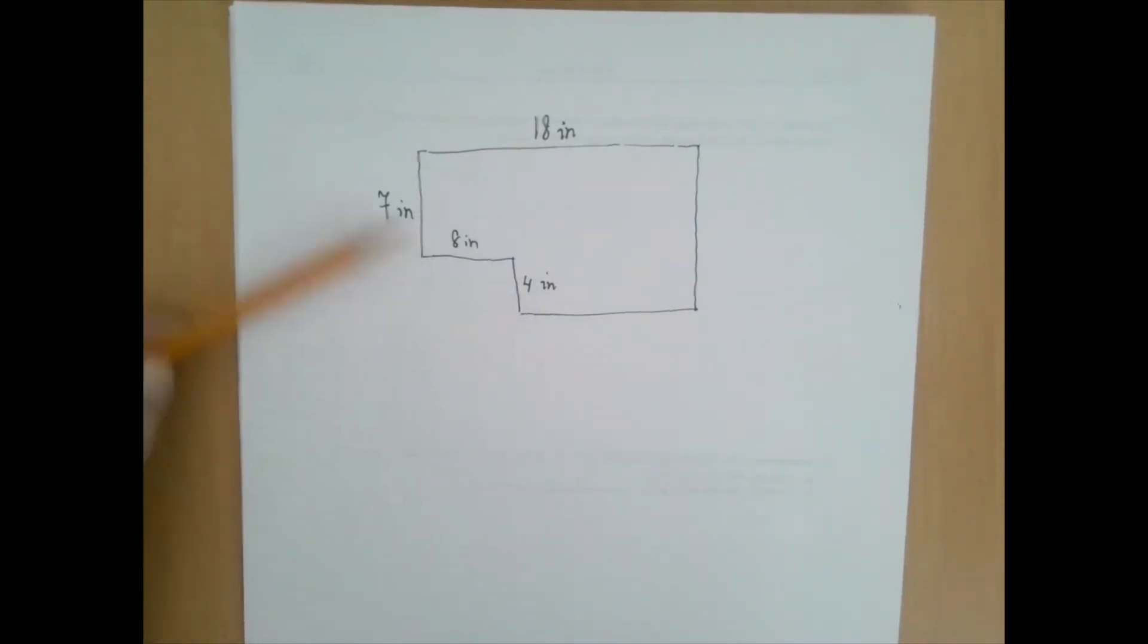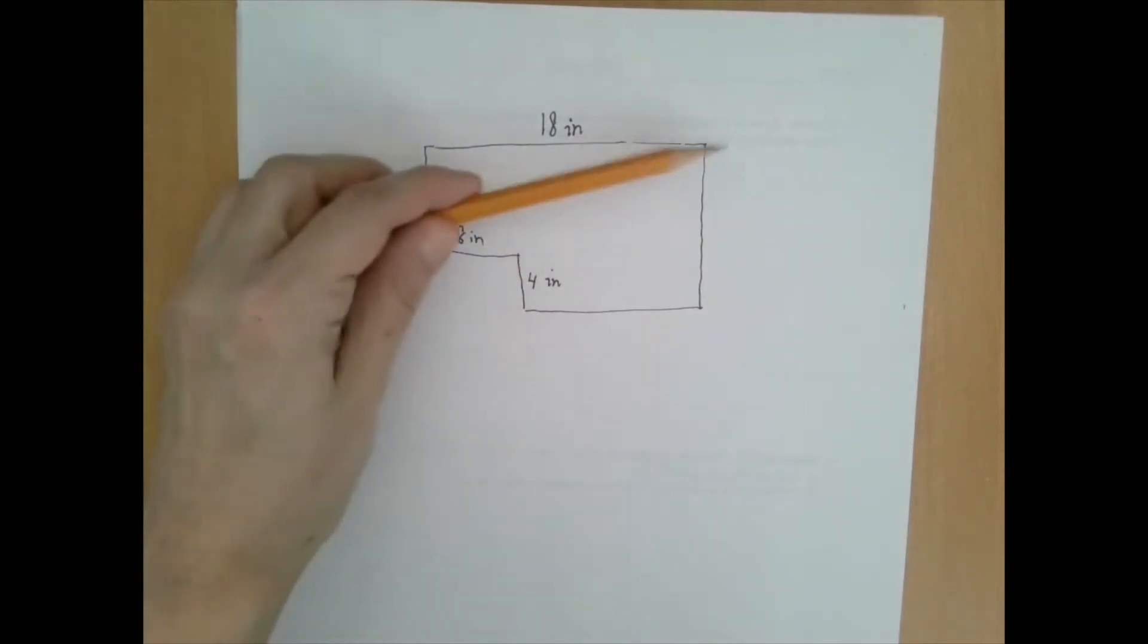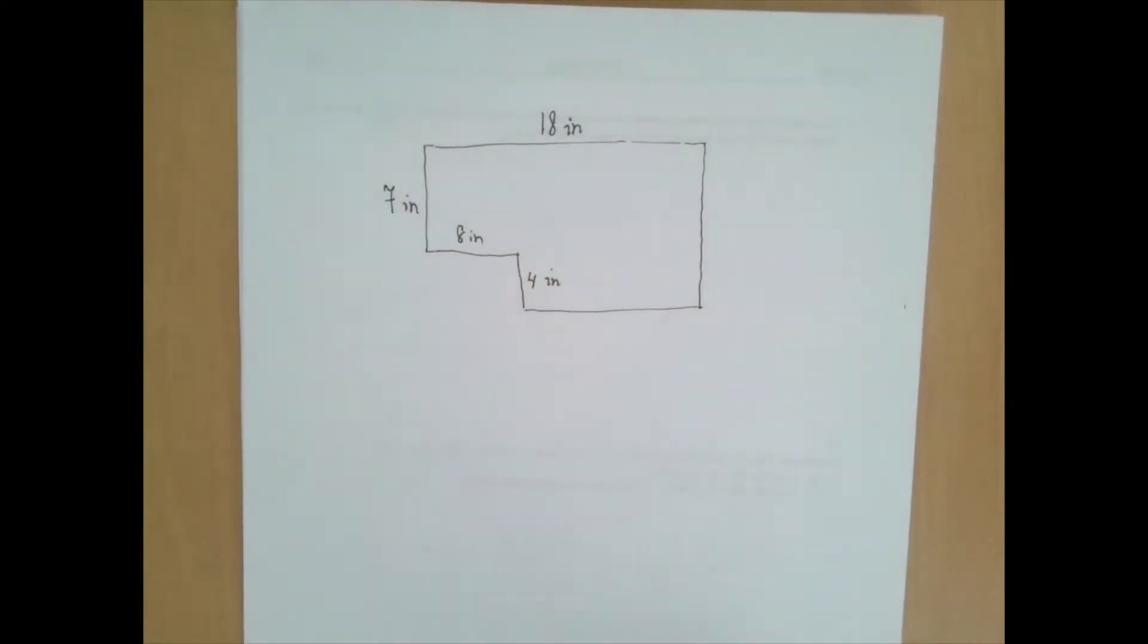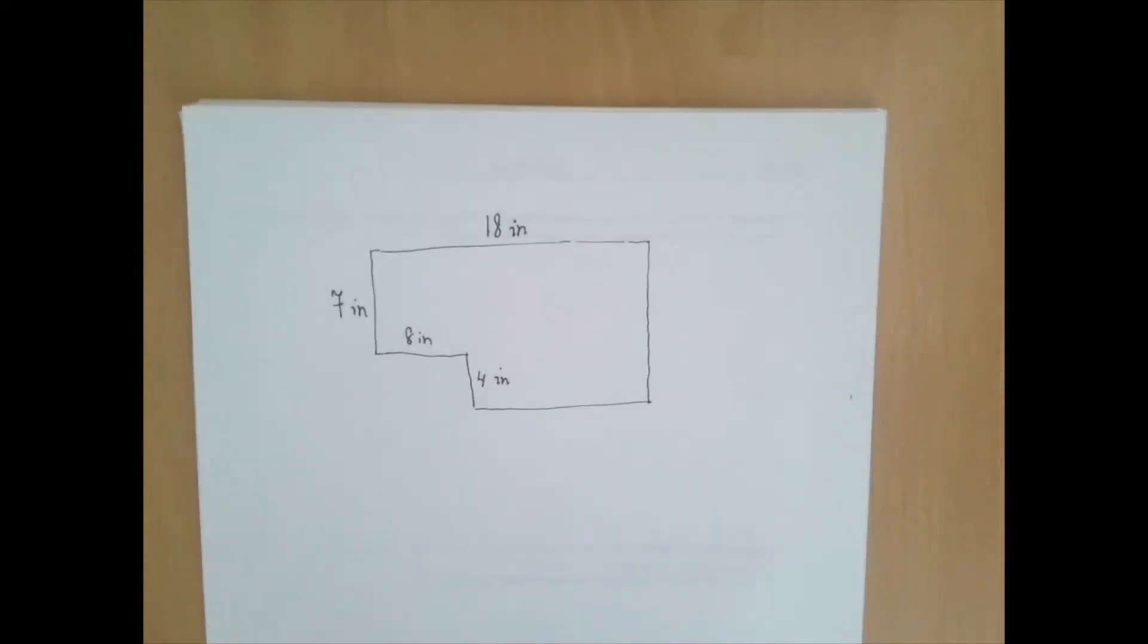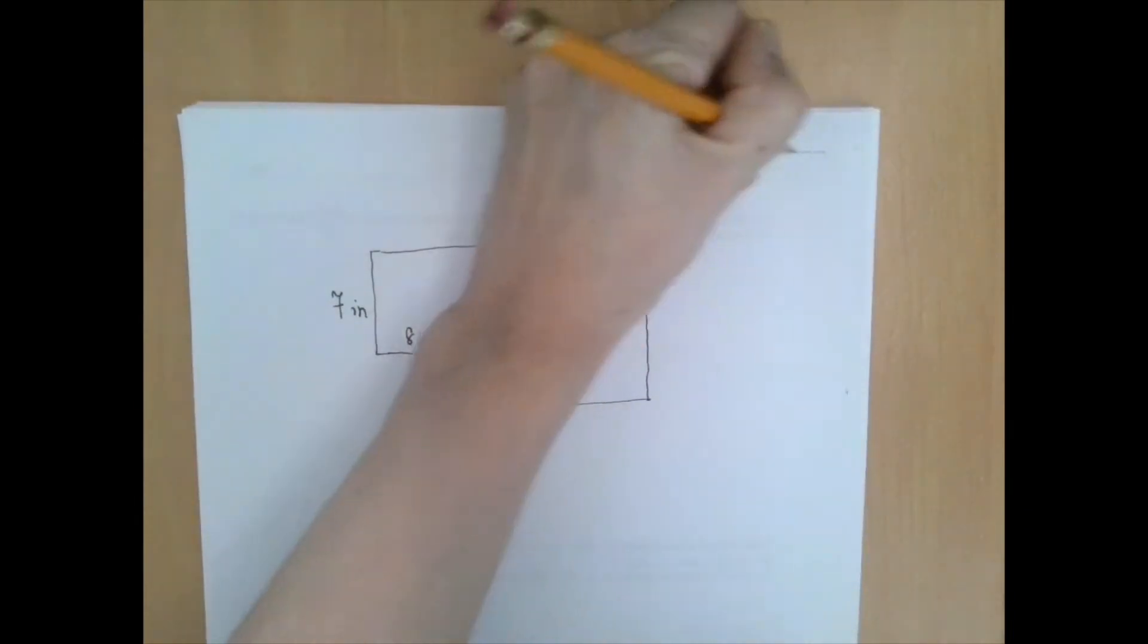We would add 4 plus 8 plus 7 plus 18, but we don't know what this side is. Well, one thing about rectangles. A rectangle is a 4-sided polygon with all 4 angles being right angles.